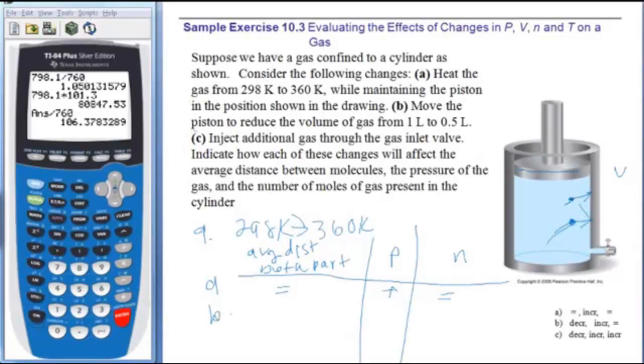For B, it says if I move the piston to reduce the volume from 1 to 0.5 liters. So here I'm assuming the same number of particles. I bring the piston down halfway. So if I bring the piston down halfway, my number of particles is still the same. I have the same number of particles in a smaller space, so the distance between the particles will go down. And because I have less wall to collide with for the same number of particles, my pressure is going to go up.